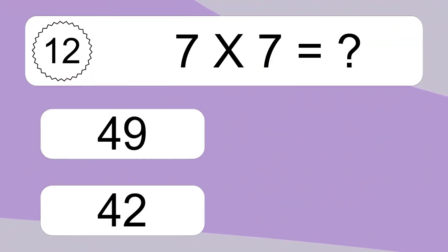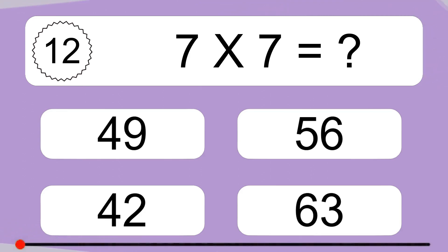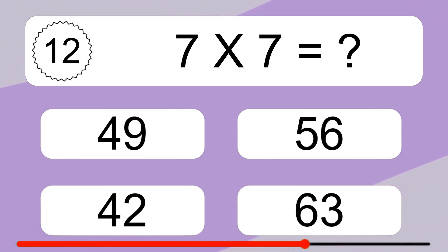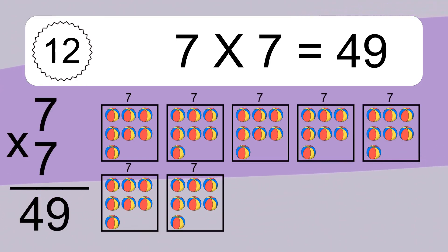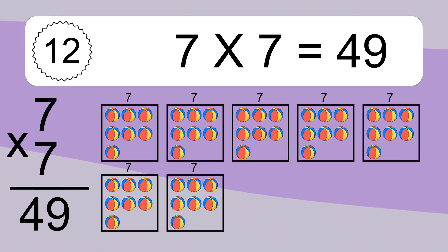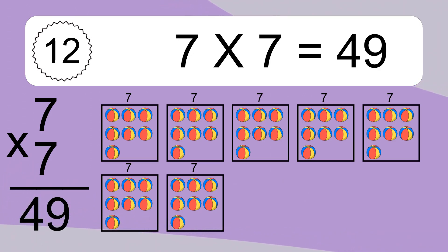7 times 7 equals what? We have 7 boxes, and each box has 7 colorful balls inside. 7 times 7 equals 49.